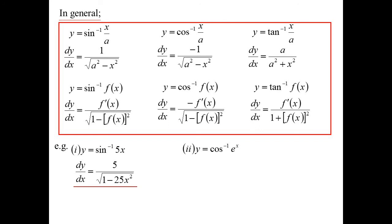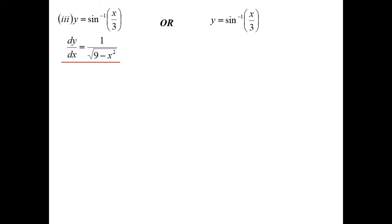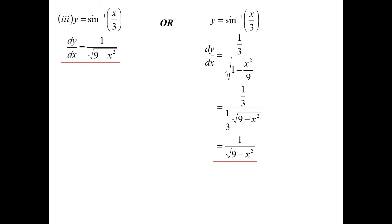The advantage of the general form is I don't have to worry about linear functions. For instance, differentiating inverse cos of e^x: it's going to be minus e^x over the square root of 1 minus e^(2x). Done in one line. I will concede that when you actually have just x over a number, the first formula has its advantage — you just go straight to 1 over the square root of a squared minus x squared. Had I used the general form, I'd have a fraction on a fraction, but multiplying top and bottom clears it and gives the same answer.